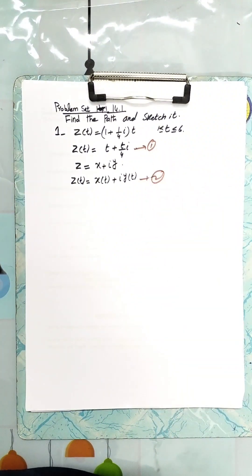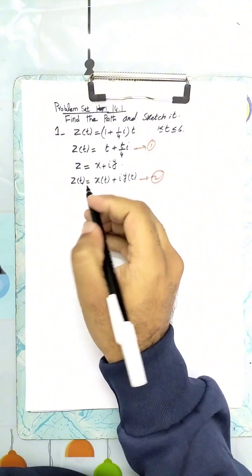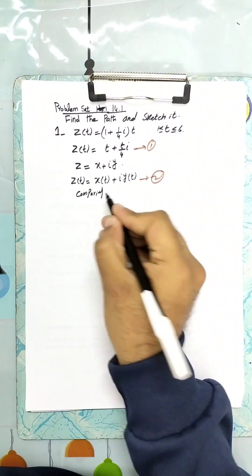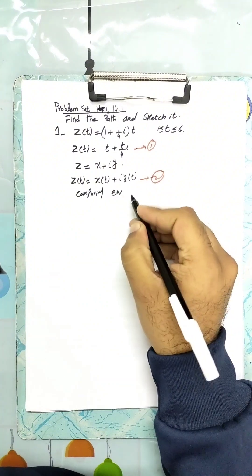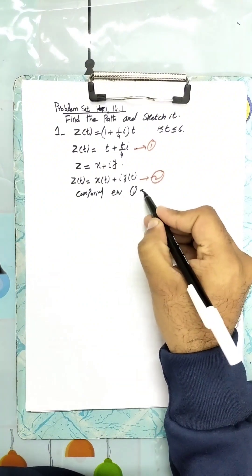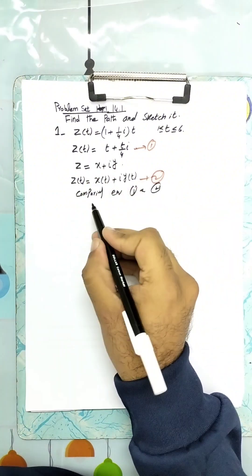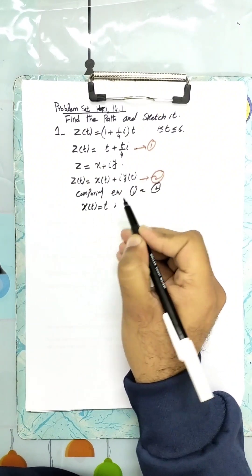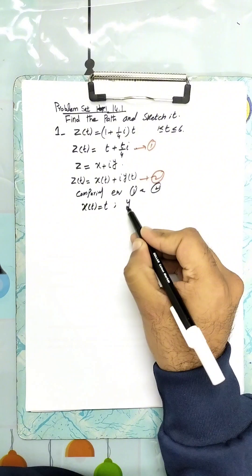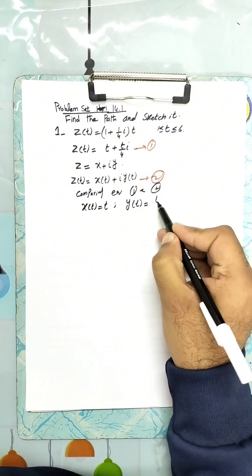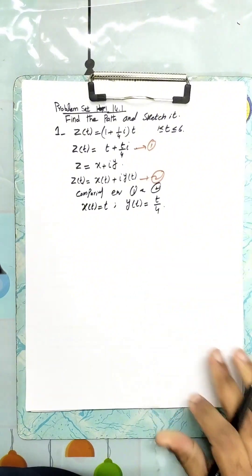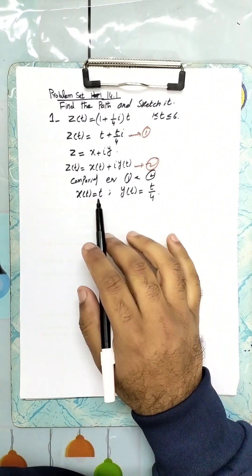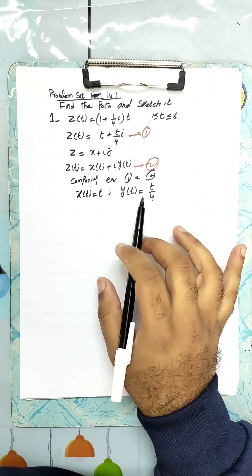Comparing equations 1 and 2, we get x of t equals t and y of t equals t over 4.